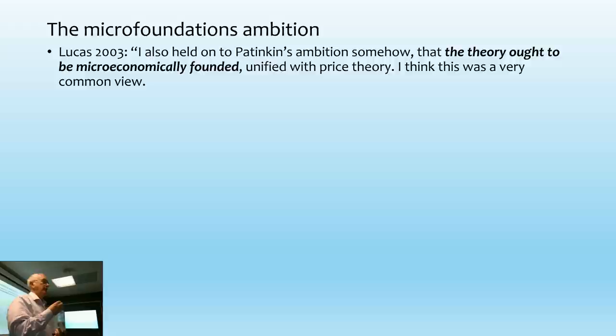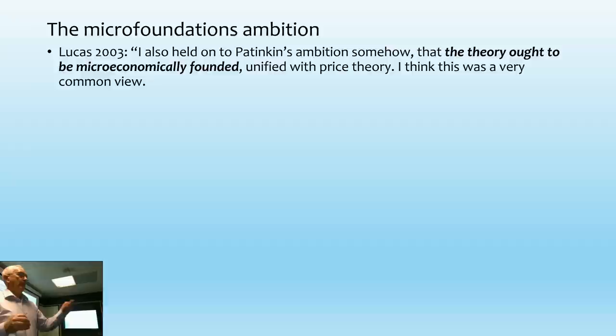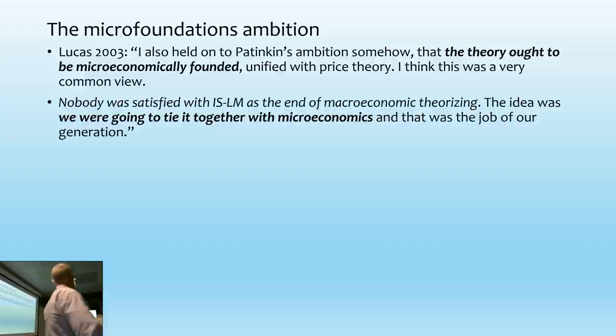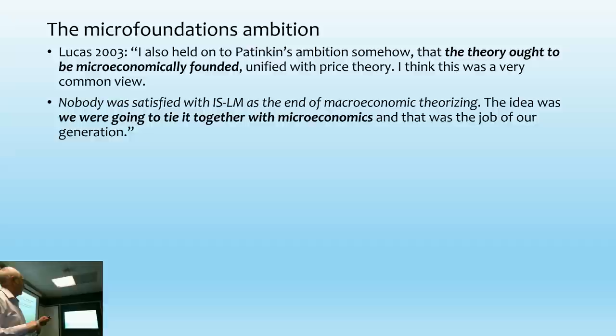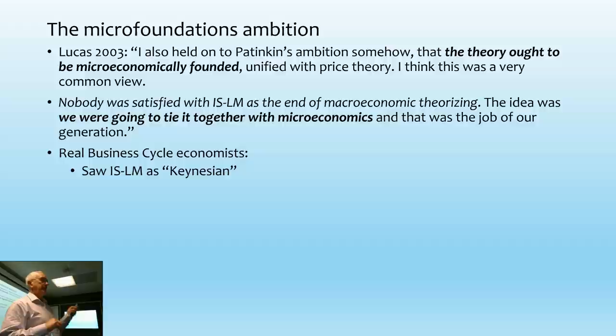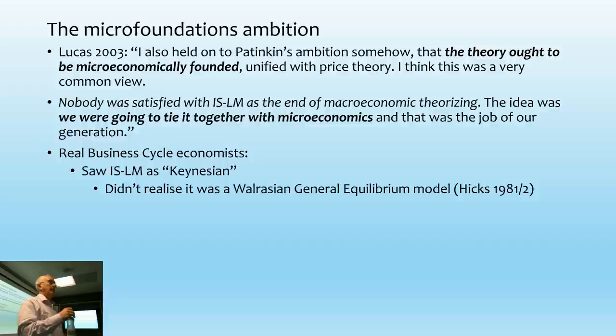What really drove the development of macro theory for the last 40 years has had nothing to do with the macroeconomy — it's had everything to do with making the theory internally consistent. That means making macroeconomics like an extended version of microeconomics. Here's Lucas in 2003, when they thought they'd solved everything. The economy boomed, passed through crises until the stock market crash in 2001 without much impact. They thought they'd all done it quite successfully. They wanted to get rid of ISLM because they saw it as Keynesian, not realising it was actually a Walrasian general equilibrium model.